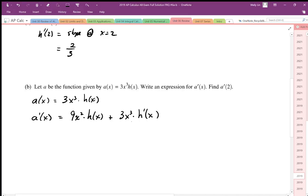Okay so that's my expression for a prime and then I can evaluate a prime at 2 by plugging in 2 into this equation. So I have 9 times 2² times h at 2 plus 3 times 2³ times the slope at x is 2.